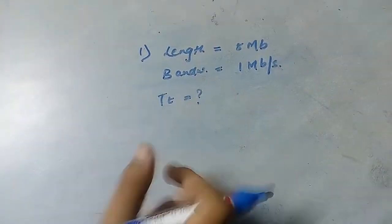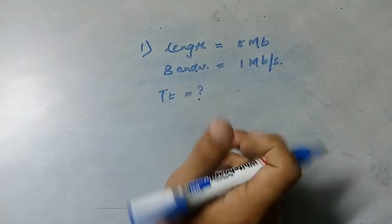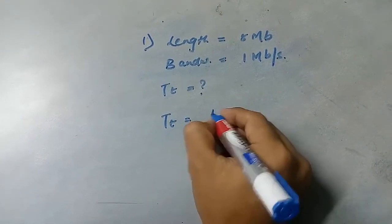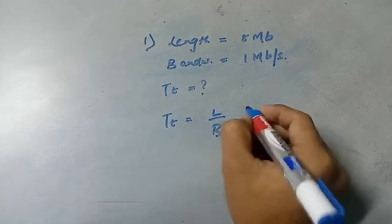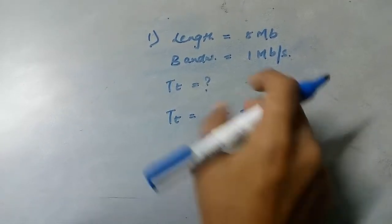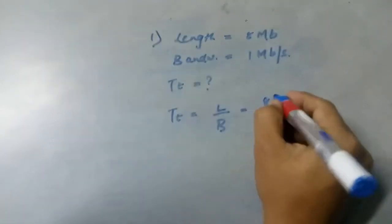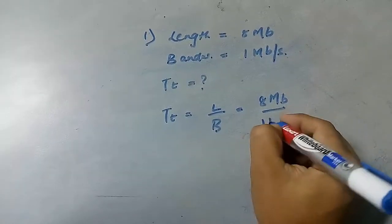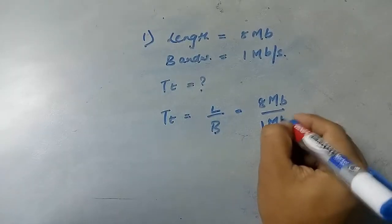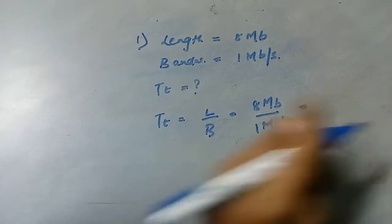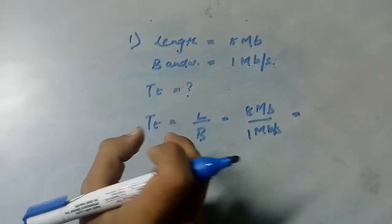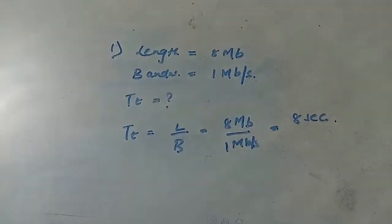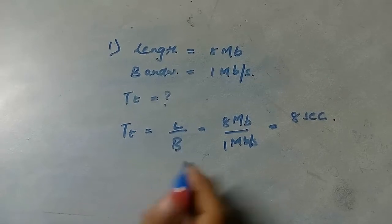Transmission delay is derived as the length of the packet divided by bandwidth. The length of the packet is 8 MB and the bandwidth is 1 MB per second, so the time taken for transmitting that packet is 8 seconds.